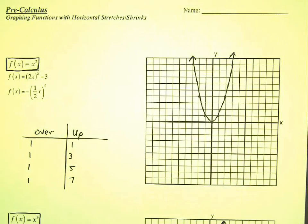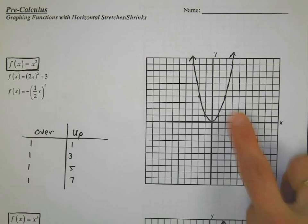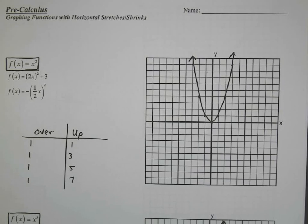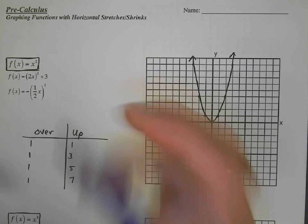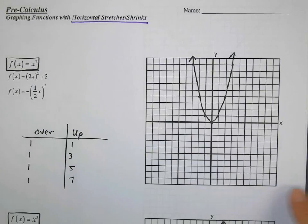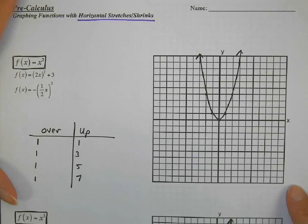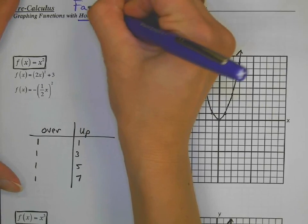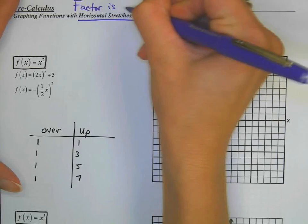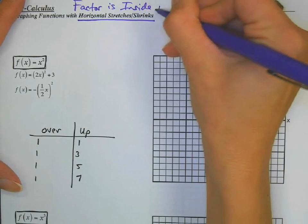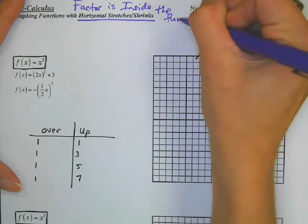Okay, welcome back. Hopefully you have all of your basic graphs, basic parabola, and his basic growth chart. We are now going to study horizontal stretches and shrinks. I'm going to write some notes up here for you because horizontal works a little different than vertical. When you are horizontal, the factor is inside the function.